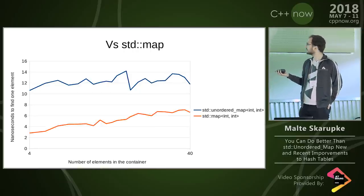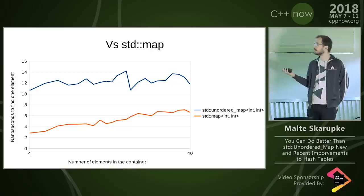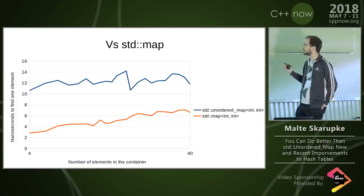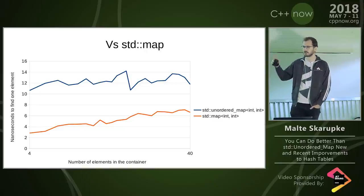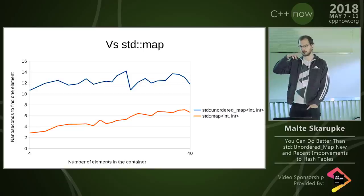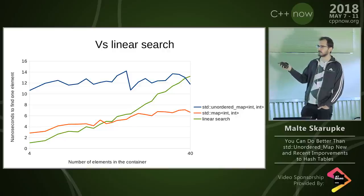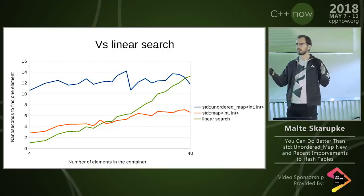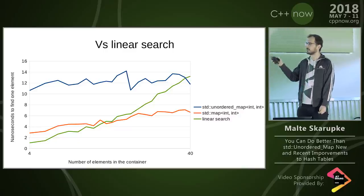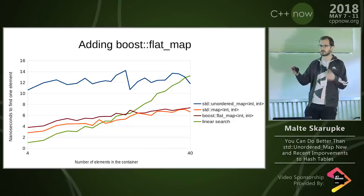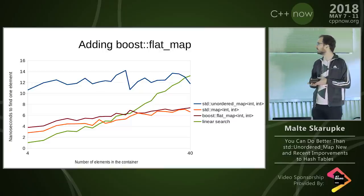Now I'm going to add std::map to this, which at this size is much faster — which should be surprising, because if you know anything about these containers you know that unordered_map has fewer constraints and should be faster. But at this small size when everything's in cache, std::map is actually faster. I'll also add linear search, which is just a std::vector with a linear scan — it starts off much faster and then quickly gets slower. And there's boost::flat_map, a sorted vector, which at this size has basically the same performance as std::map, as you'd expect.